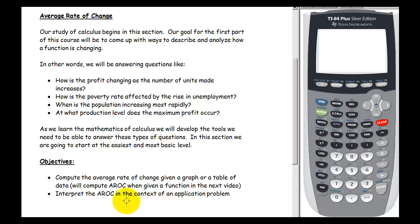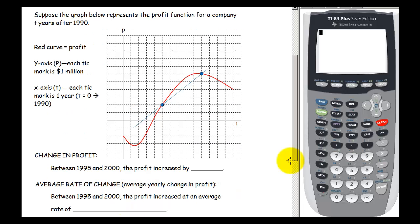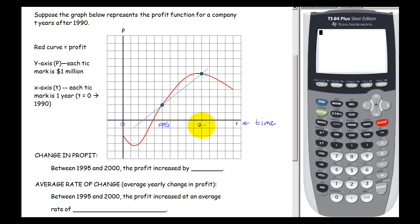Can we write a sentence that describes what the average rate of change means? Let's start by looking at the profit function depicted in this graph. The red curve is my profit function, and profit depends on the variable t, which is time in years after 1990. So t equals zero represents 1990, t equals five is 1995, and t equals ten is 2000. The y-axis represents profit, where each unit is one million dollars — so two million, four million, six million dollars.